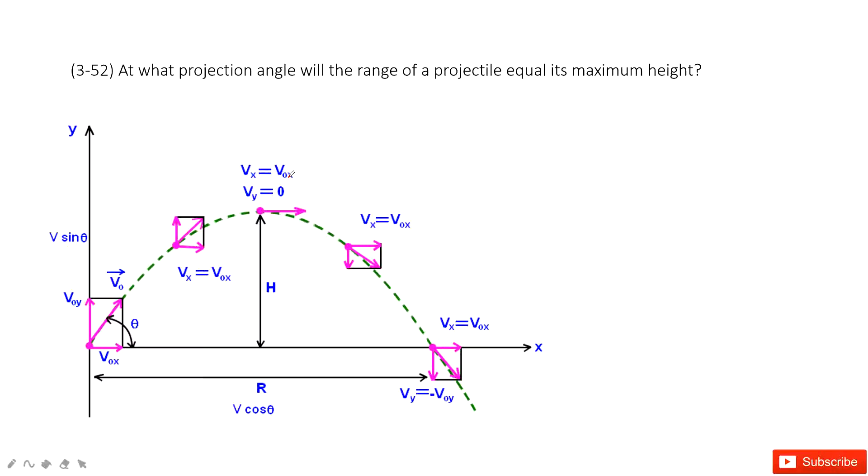In this problem, we need to find the projection angle that makes the range of the projectile motion r equal to the maximum height h. So we need to make sure r equals h.